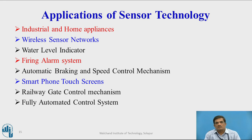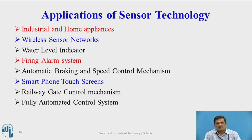There are tremendous applications of sensor technologies. Sensors are widely used in industrial and home appliances such as TVs and refrigerators. They are also used in establishing wireless sensor networks to gather information wirelessly, water level indicators, firing alarm systems, automatic braking and speed control mechanisms, smartphone touch screens, railway gate control mechanisms, and fully automated control systems. Among these applications, 99% have sensors in place.